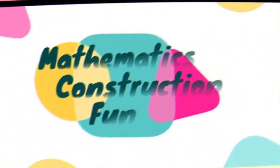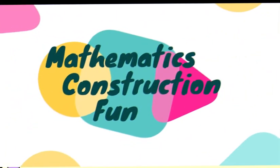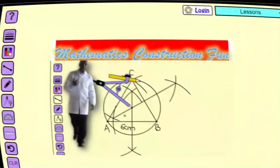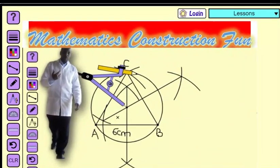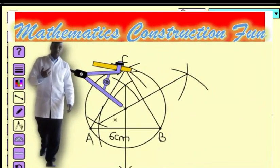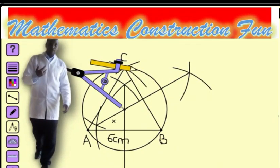Hello, let's have some fun as we construct an equilateral triangle of 6 cm and later draw a circle touching its vertices. We are going to construct an equilateral triangle of 6 cm and later draw a circle touching its vertices.